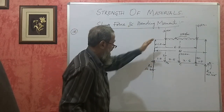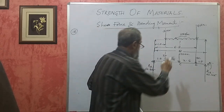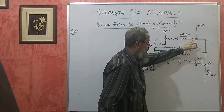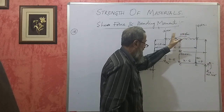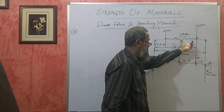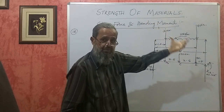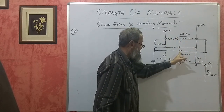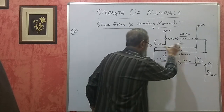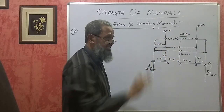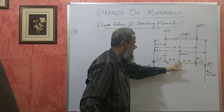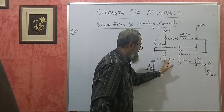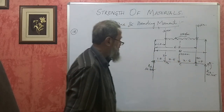The next step is to redraw the beam, converting the UDL into a point load. Since there is no point load within the UDL span, the entire UDL can be converted into one point load. The span is 5 meters at 10 kilonewton per meter, giving 50 kilonewton, placed exactly at the midpoint — that is 2.5 meters from each end of the UDL span.